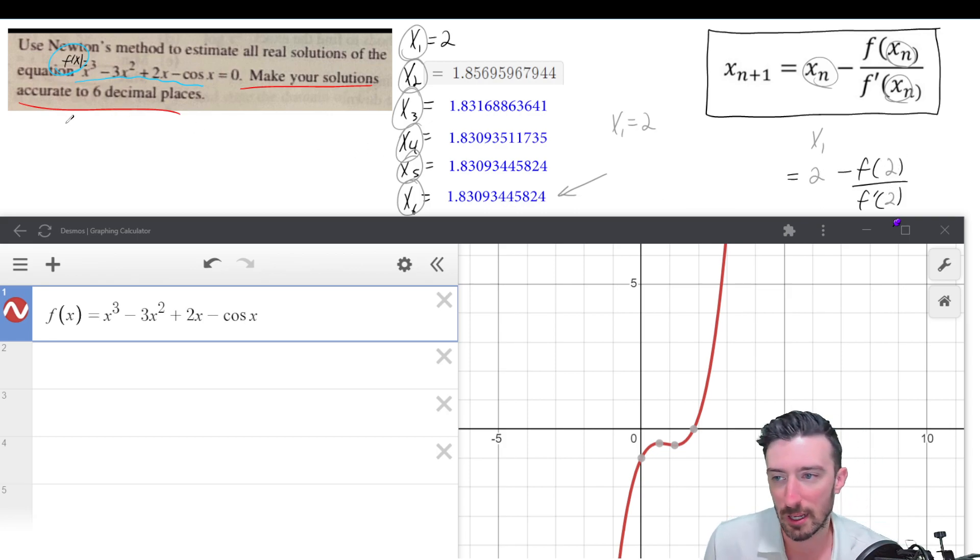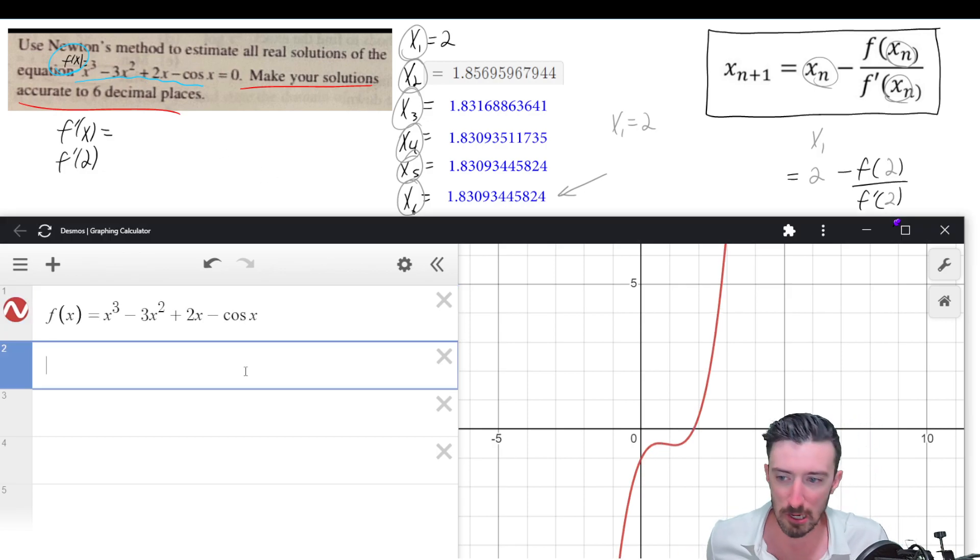Now, if I want, I could do this by hand, figure out what f' is, and then I could plug in two. And I also plug in two into the original function, but we're not going to do that because it's annoying, right? Let's use the modern technology before the AI wipes us all out.